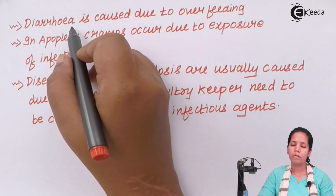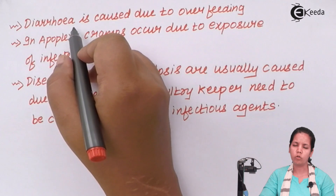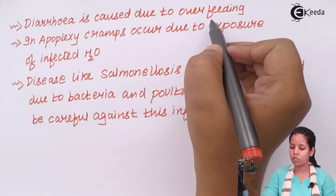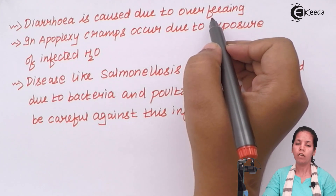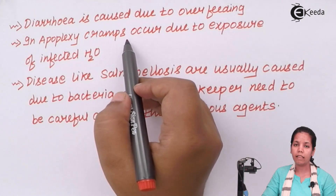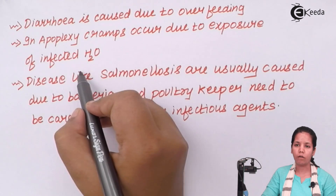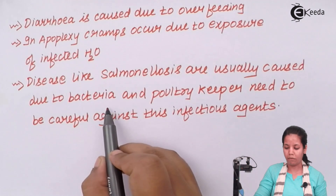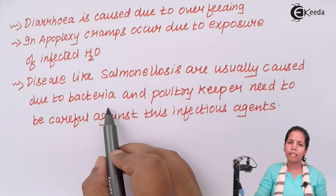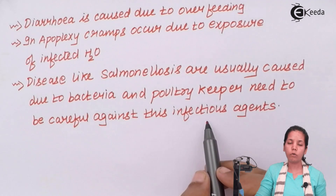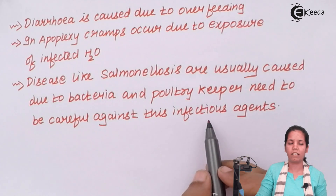The disease that commonly happens in wild or native Indian poultry is diarrhea, which is extensively caused due to overfeeding the poultry hen with too much food material. Apoplexy is caused when cramps occur in the feet or leg portion due to infected water. Salmonellosis is caused by the bacteria Salmonella typhi, and in poultry this is a foodborne or sometimes waterborne infection. Poultry keepers need to be very aware of these infectious agents and keep a check on any poultry getting infected.